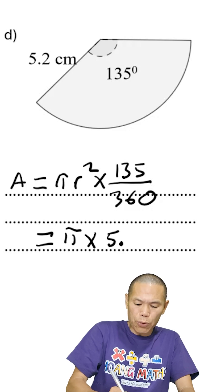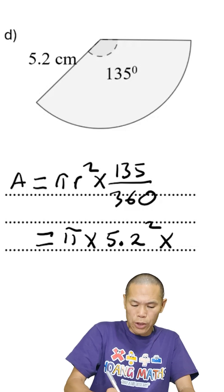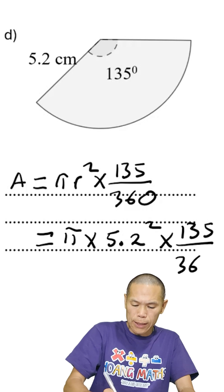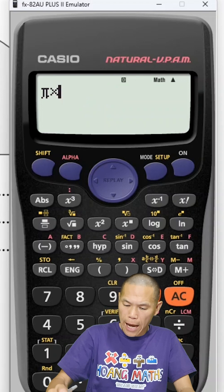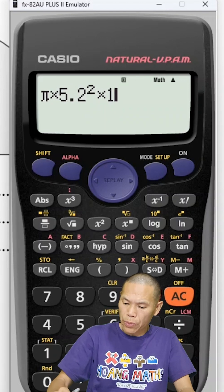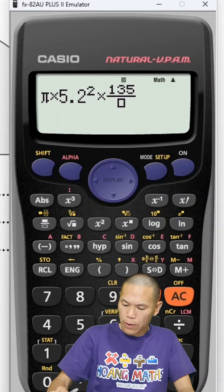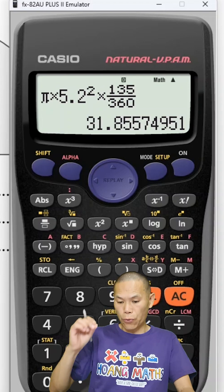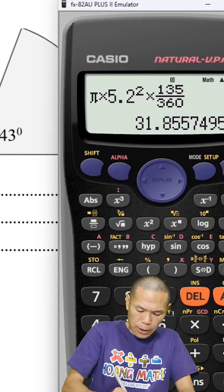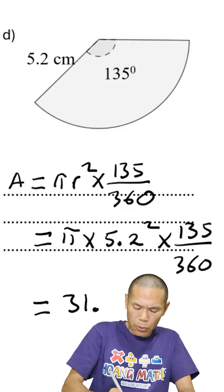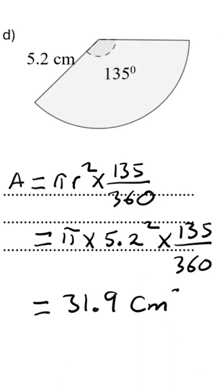So that means it equals π times 5.2 squared times 135 out of 360 degrees. That gives 31.9, correct to one decimal place — so 31.9 square centimeters.